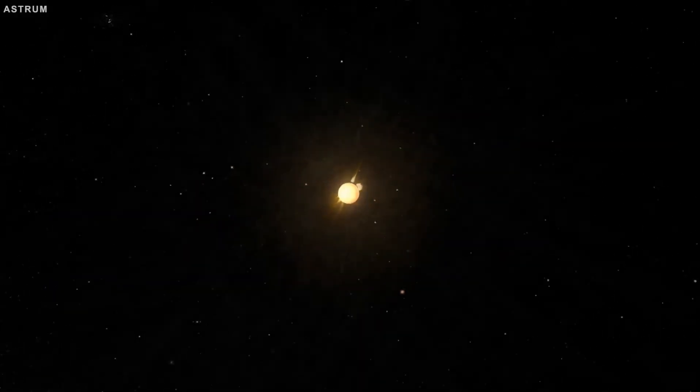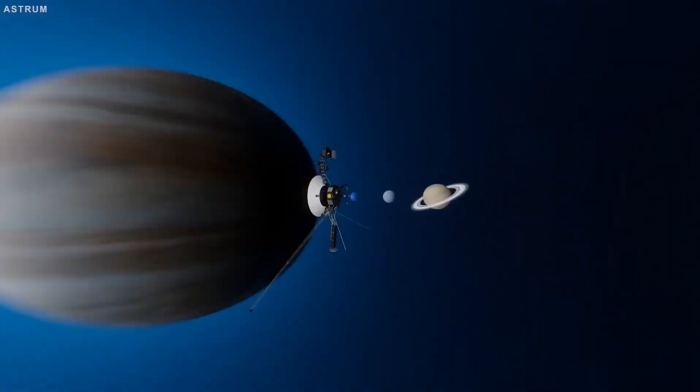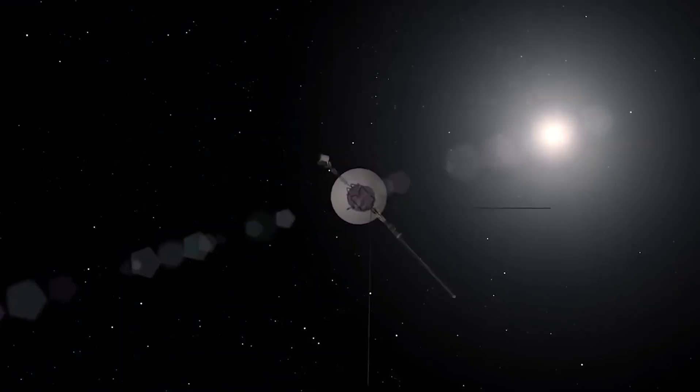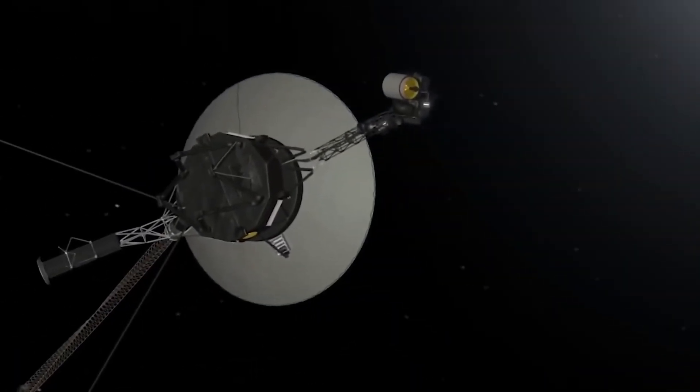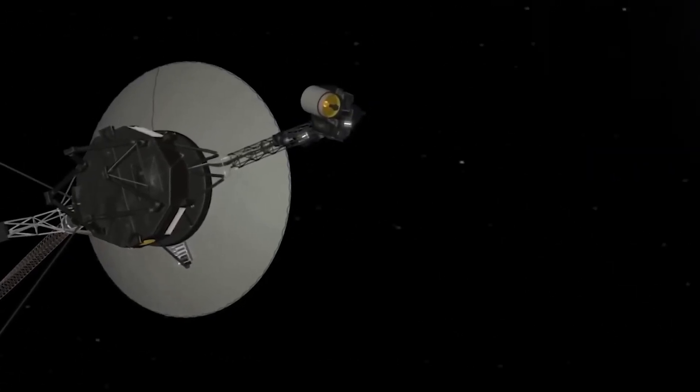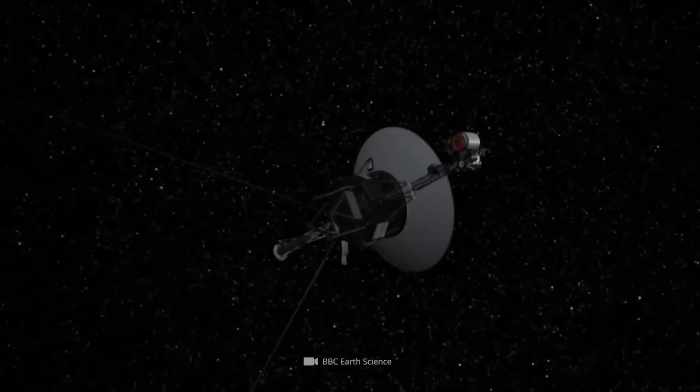Most people believe that after crossing the boundary of our solar system, it simply became a silent observer, whispering back signals from the edge of the void. But now, something has changed. Voyager 2 has seen something. Something that was never supposed to move. Something that wasn't supposed to be there.